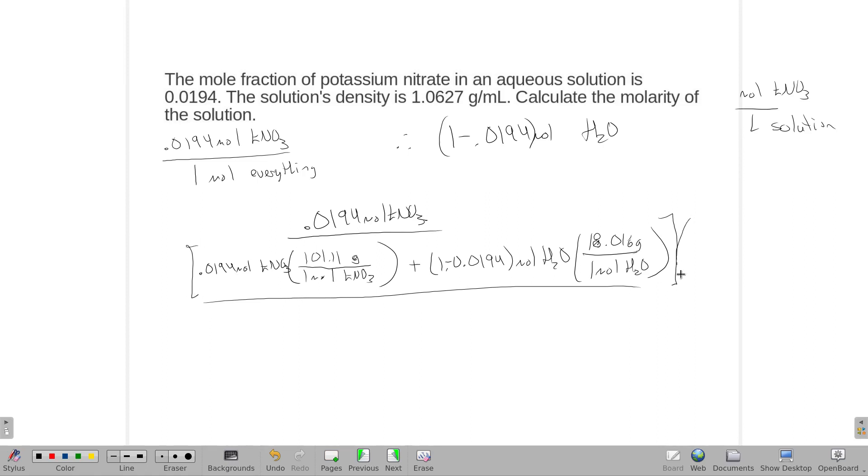We're going to convert that into a volume by saying 1.0627 grams per milliliter for the density, and then 1,000 milliliters is one liter.